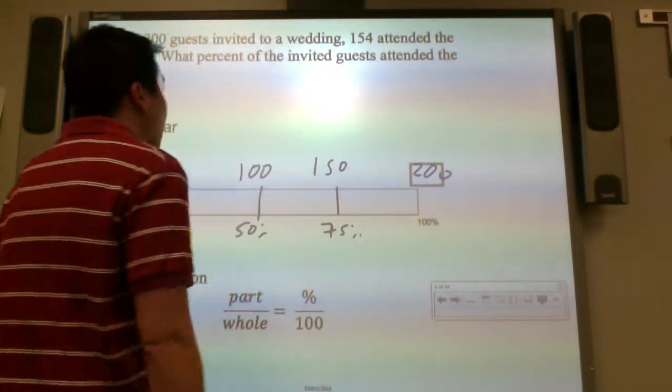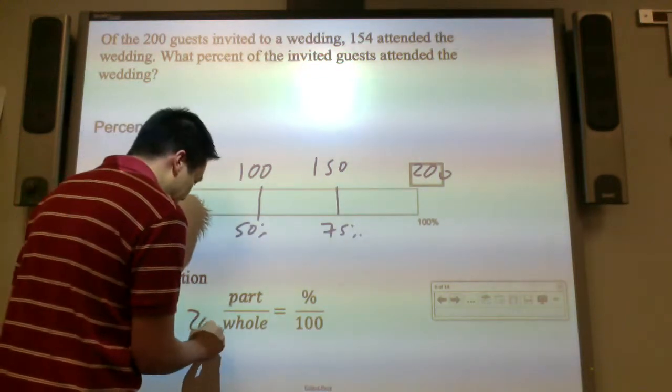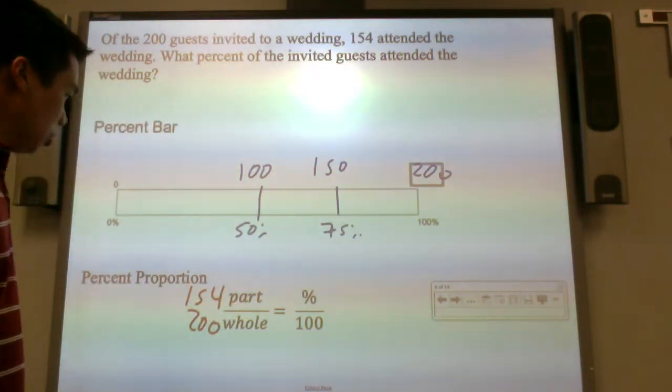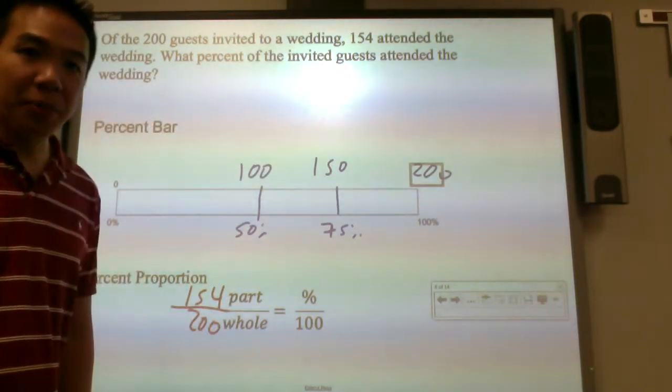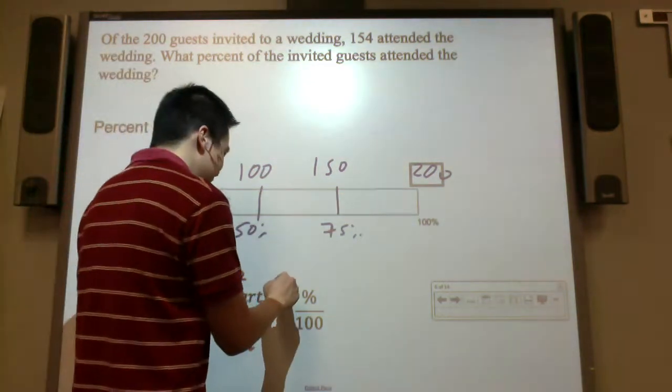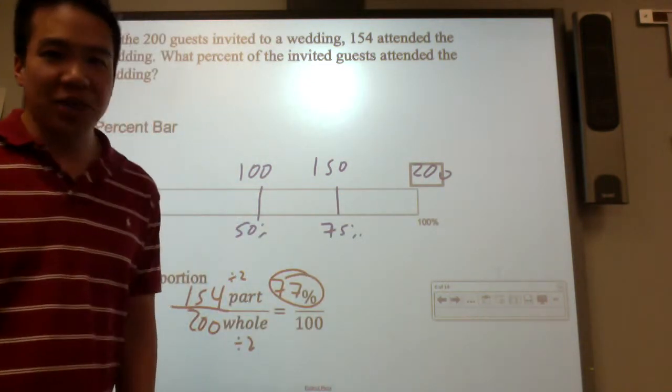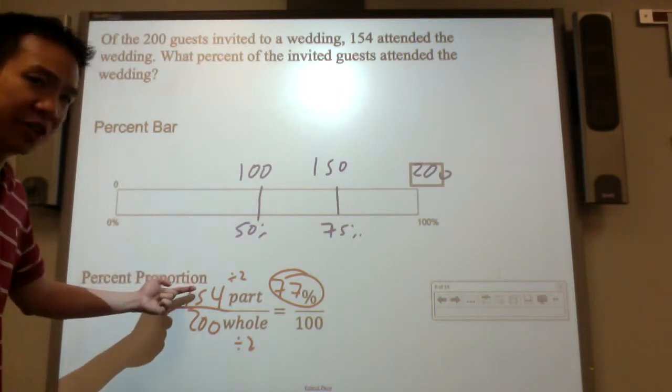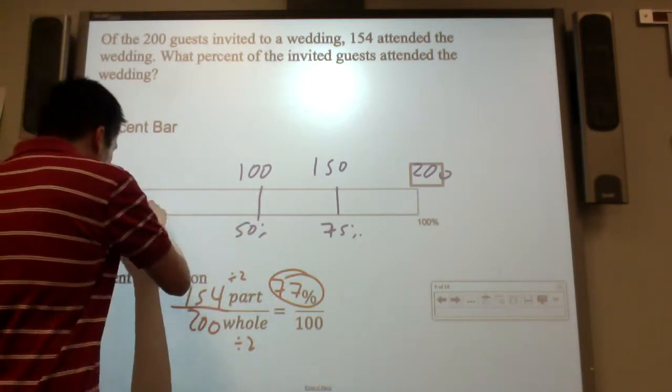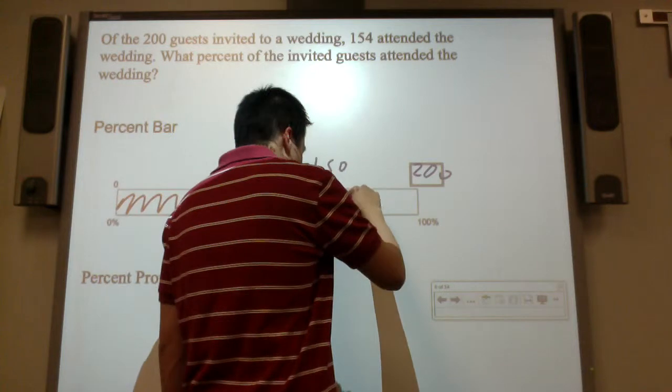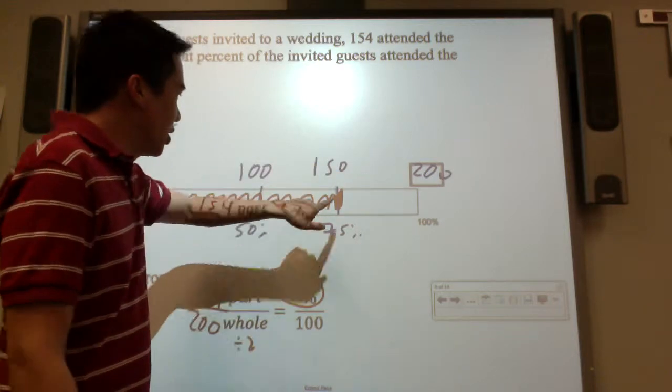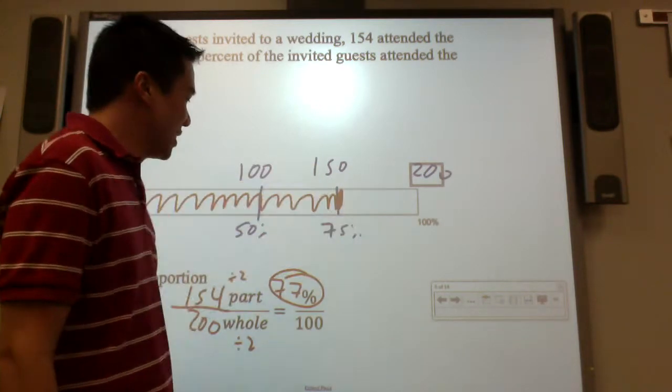Let's use the percent proportion for the exact one. There are 200 people invited to the wedding, that's the whole thing. Part of the wedding is 154. Are you going to build it up or break it down? We're going to break it down by dividing by 2. What's 154 divided by 2? 77%. So 77% attended the wedding. 154 is 77% of 200. It is more than half of 200, more than three quarters of it, it is 77% of it.